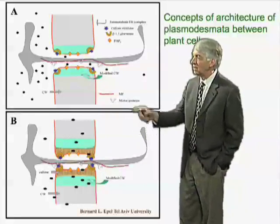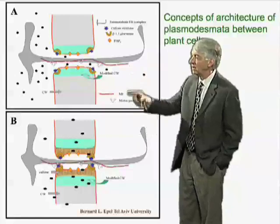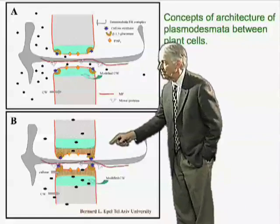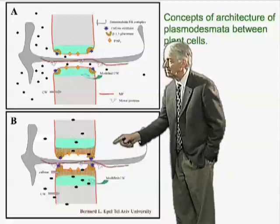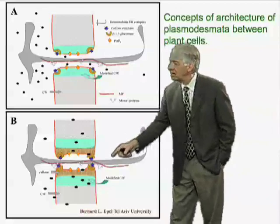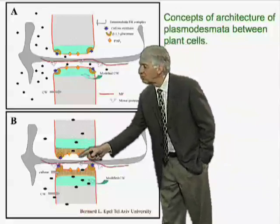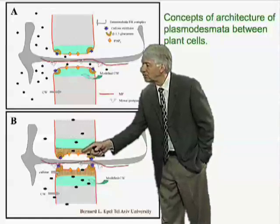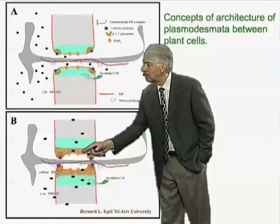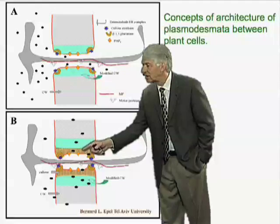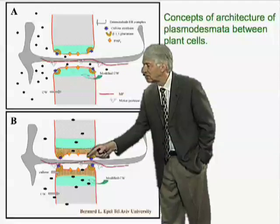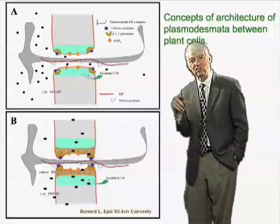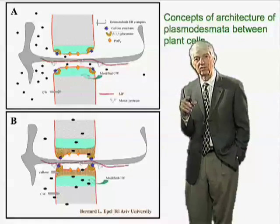During early and later parts of development, you can see some changes in the structure of these plasmodesmata. Here you see they're very much more rigid, bolstered by additional beta-1,3 glucans and other molecules that give rigidity to those structures. So the question is: how does a virus manage to squeeze through that structure?